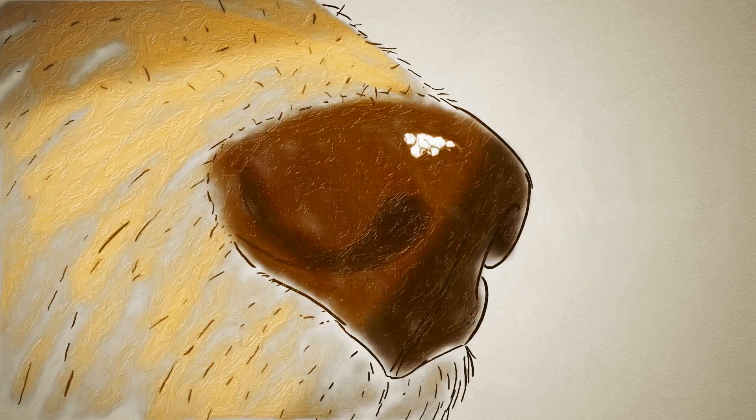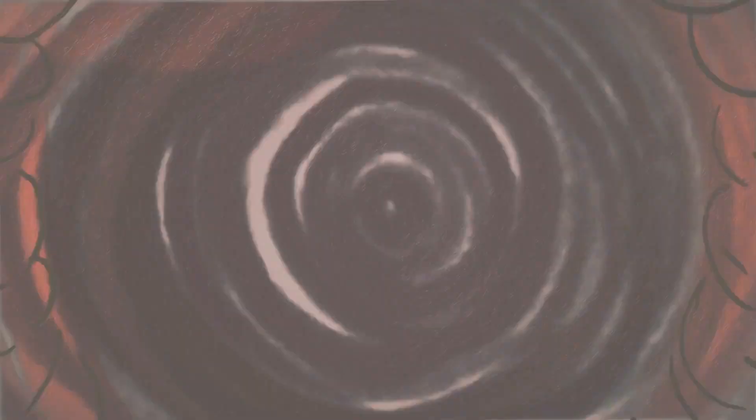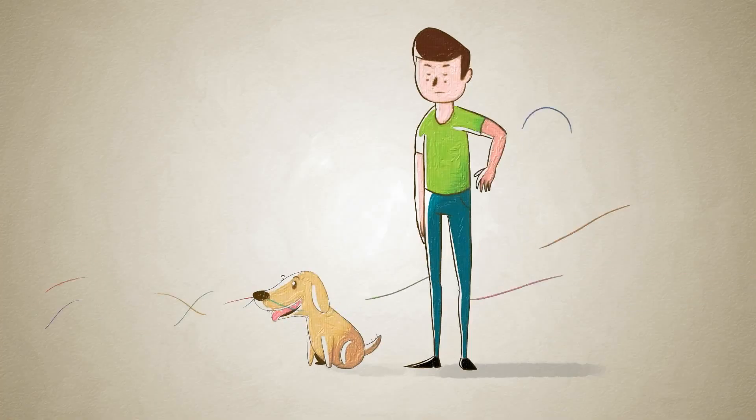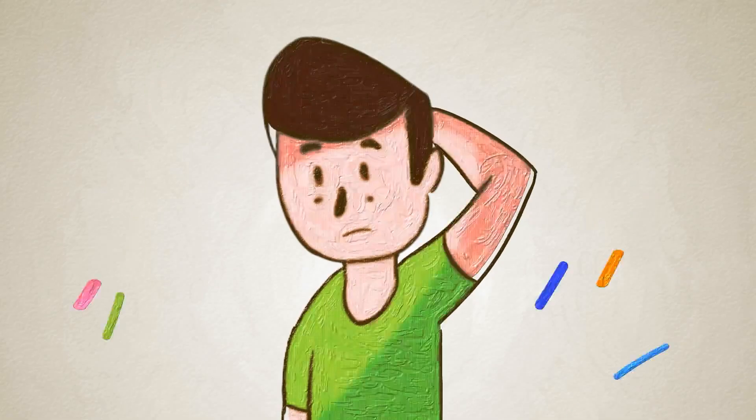Because olfaction is more primal than other senses, bypassing the thalamus to connect directly to the brain structures involving emotion and instinct, we might even say a dog's perception is more immediate and visceral than ours.